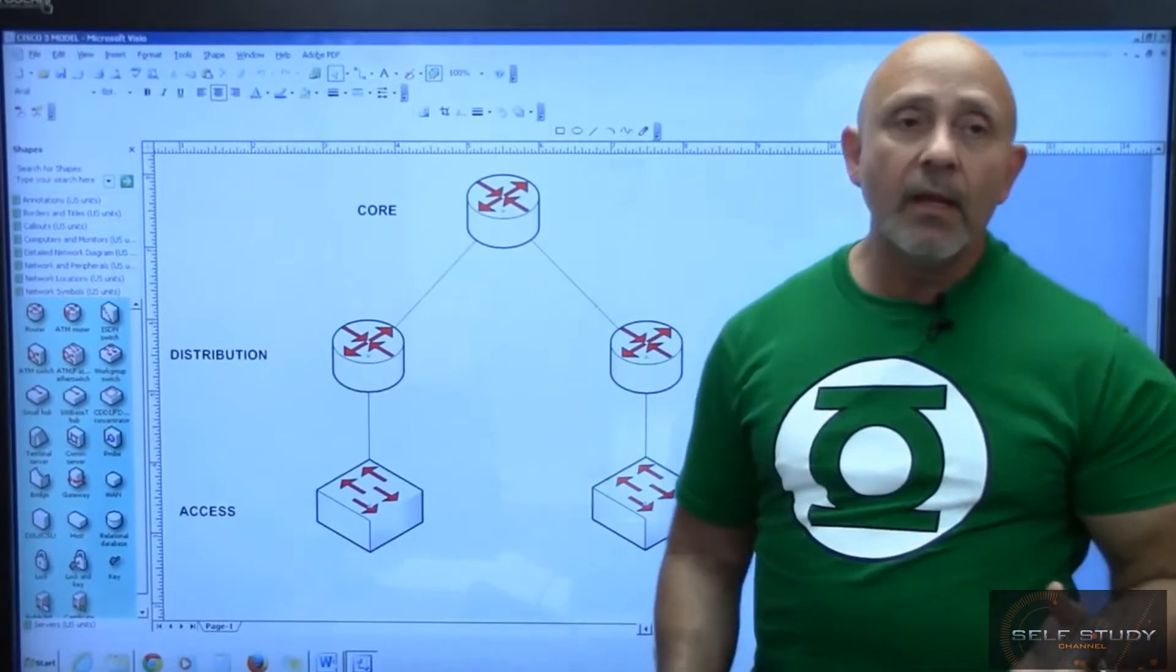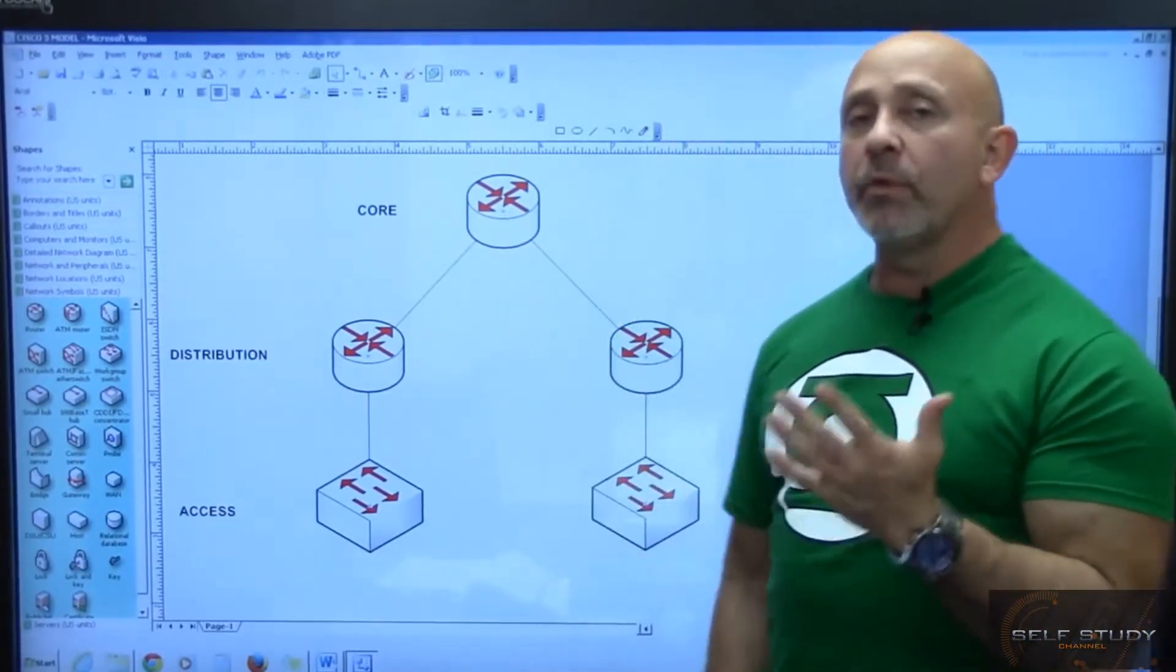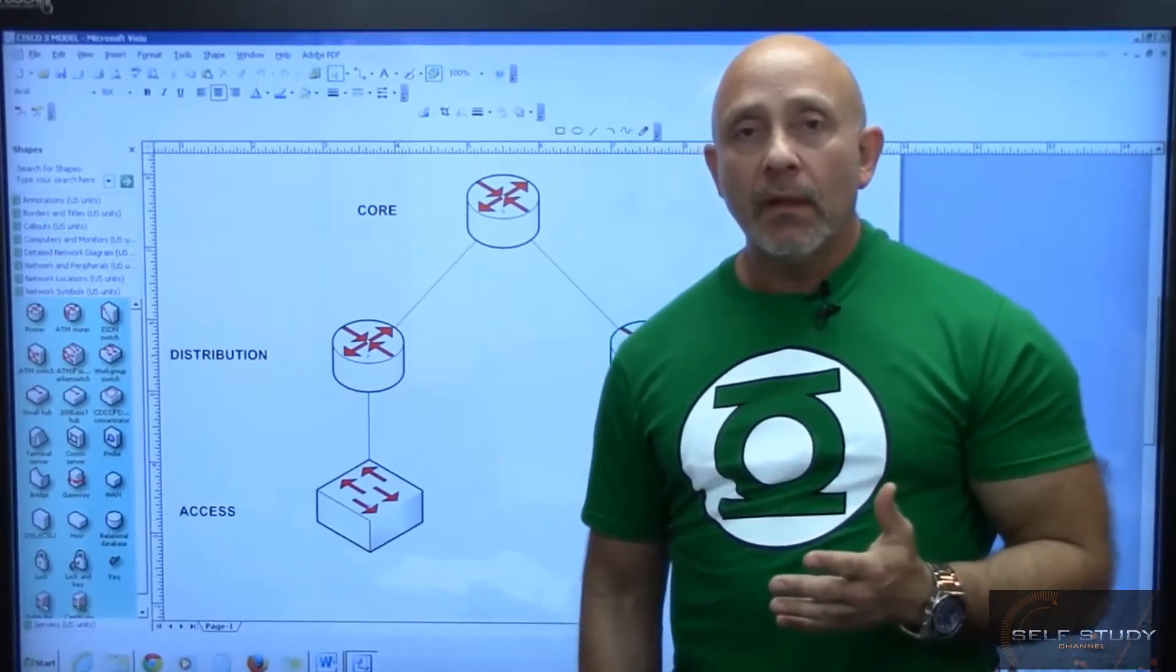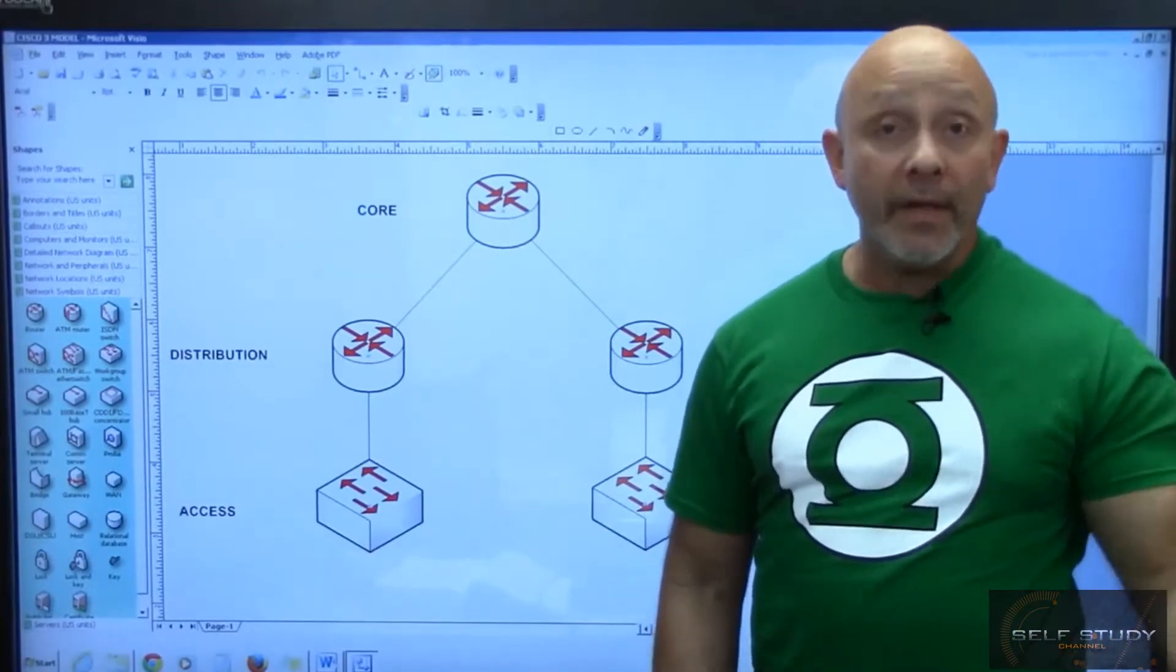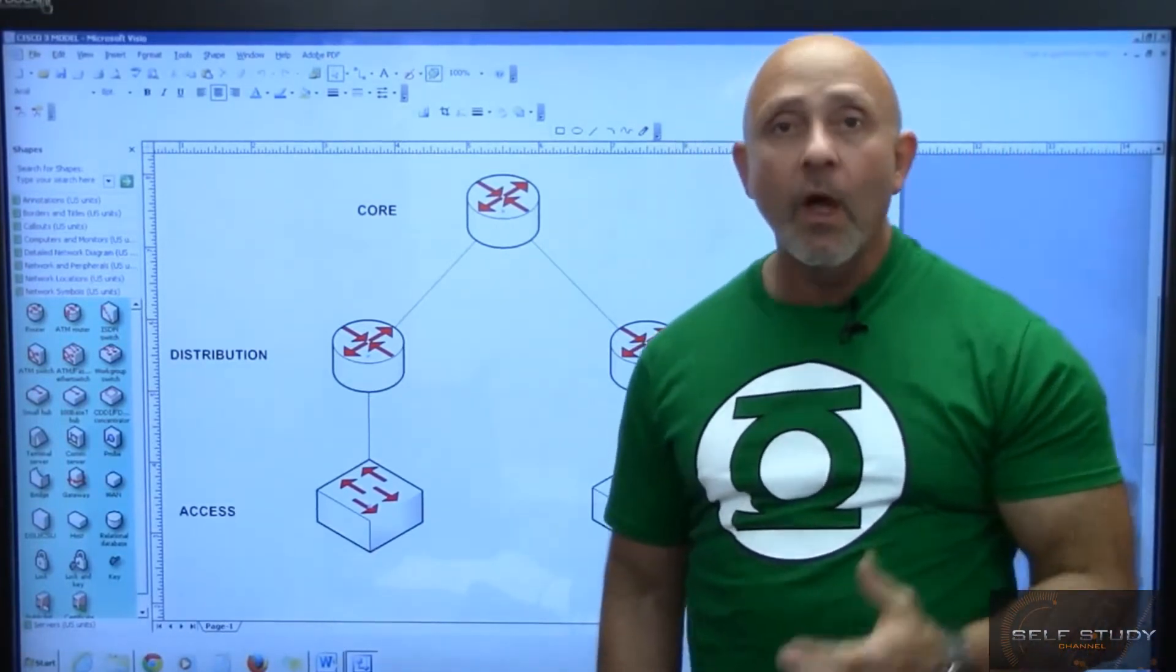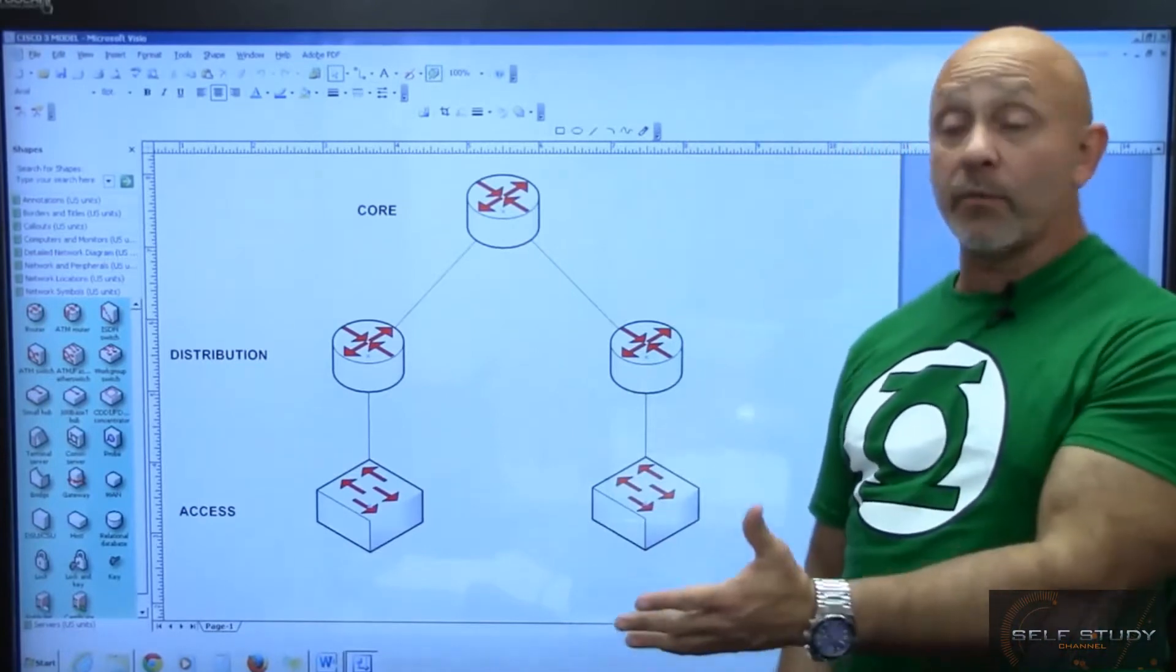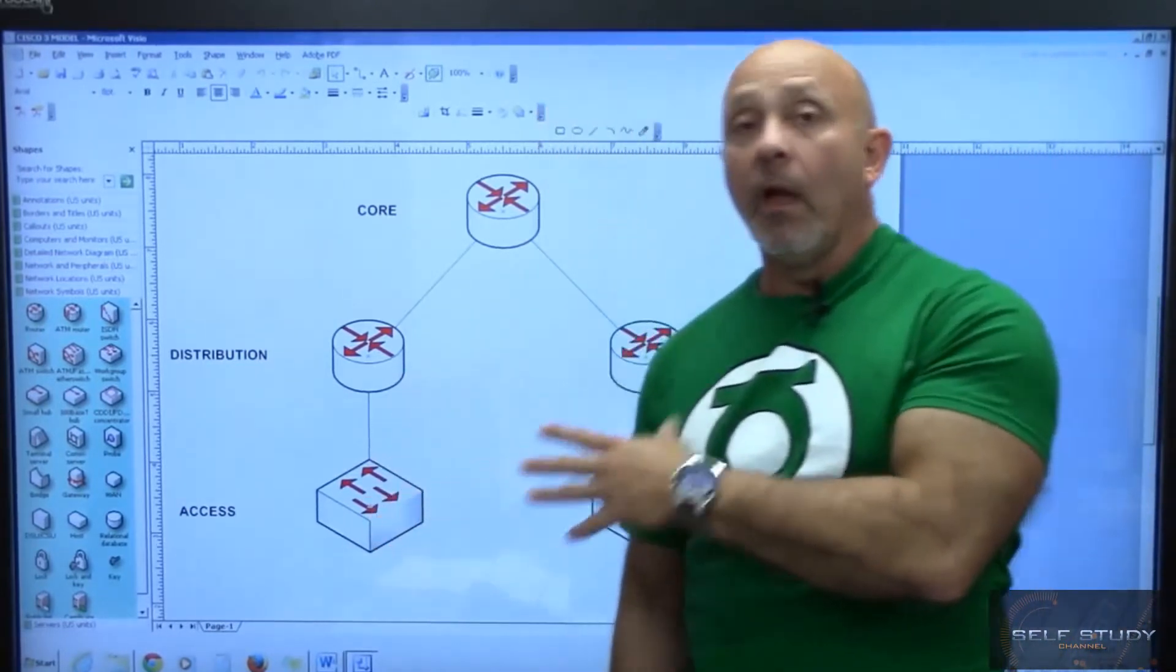As you can see, it's not always going to take it to the core. Because in the distribution layer, that'll be your NAT, your firewall, your inter-VLANs, your routing policies, your quality of service, your policy-based routing—all that will be here at the distribution layer.